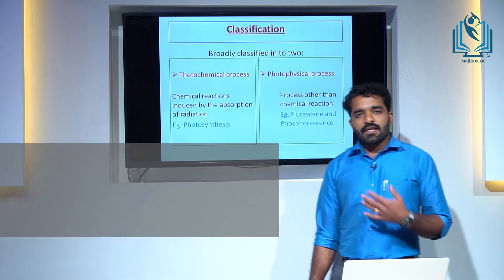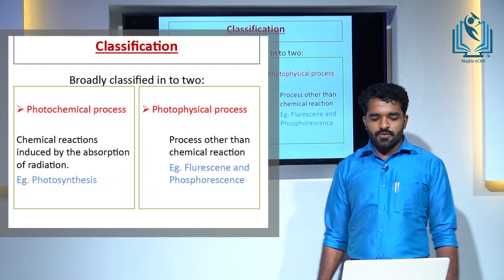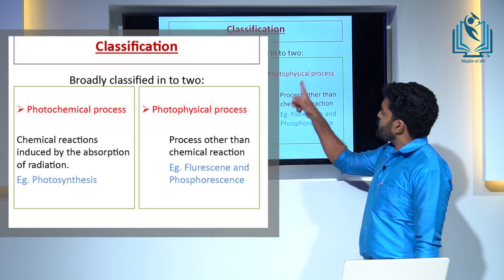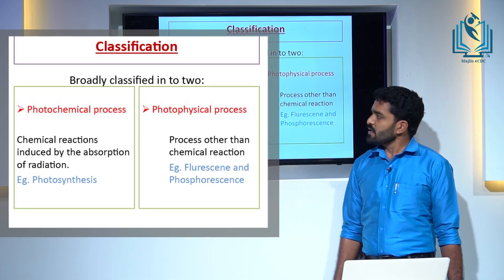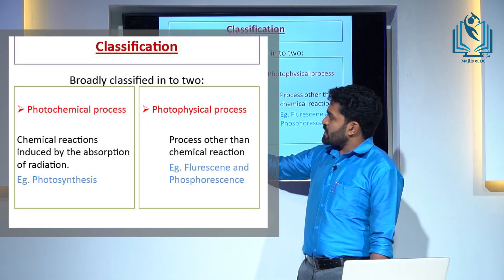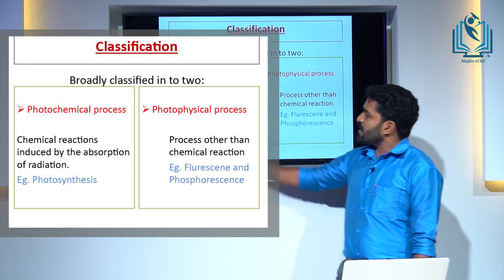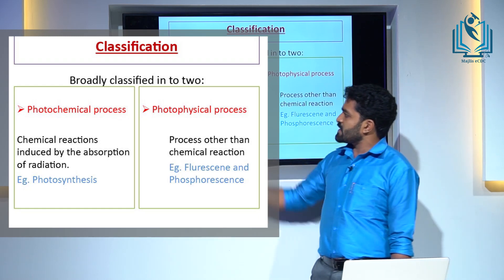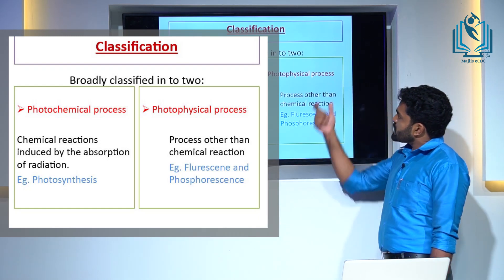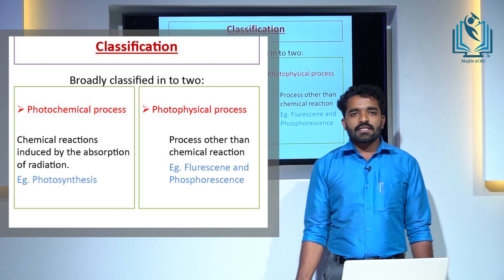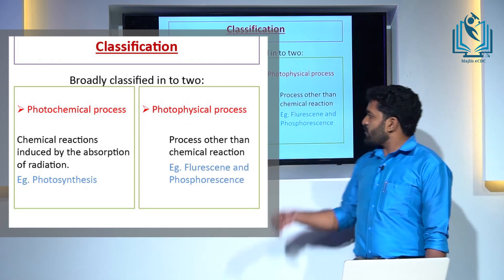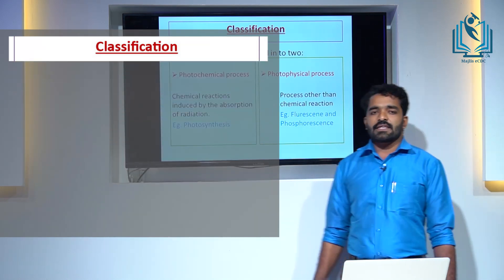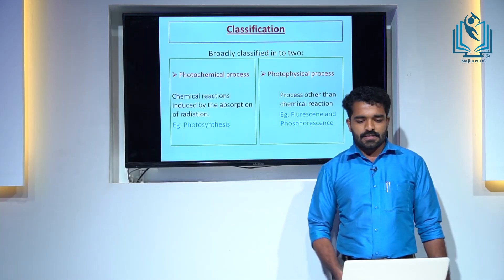The processes under photochemistry are broadly classified into two. They are: first, photochemical processes, and second, photophysical processes. Photochemical processes are chemical reactions induced by the absorption of radiation — for example, photosynthesis. Photophysical processes are all the processes other than chemical reactions — for example, fluorescence and phosphorescence.